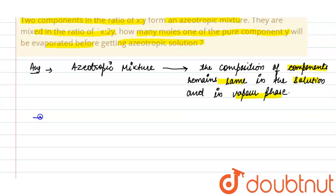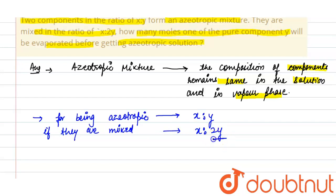for being azeotropic, two components are mixed in the ratio x:y. But if they are mixed in the ratio x:2y, then what happens is the extra y moles will be evaporated before getting azeotropic mixture.